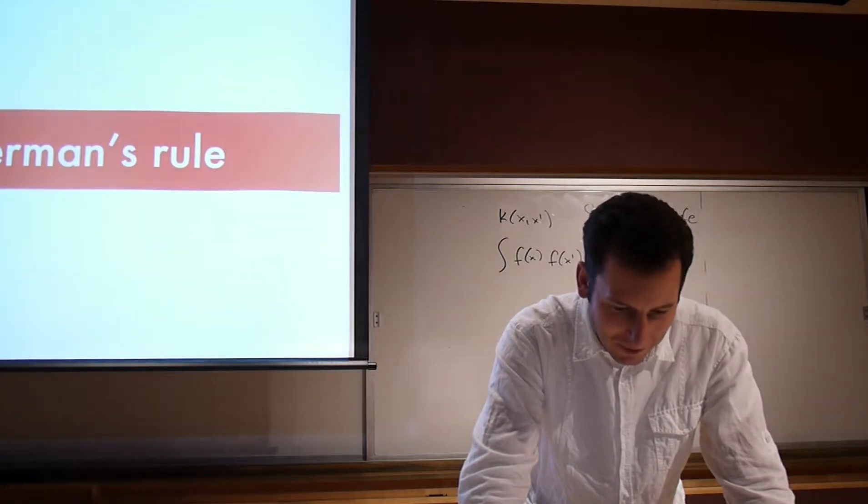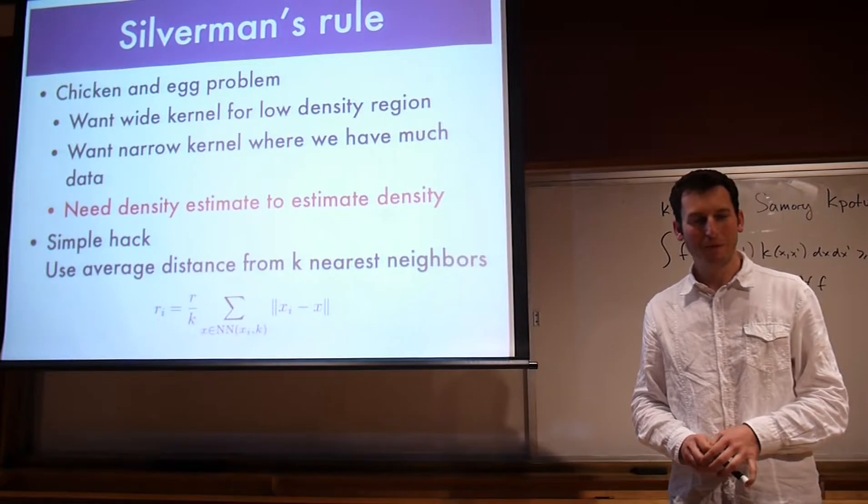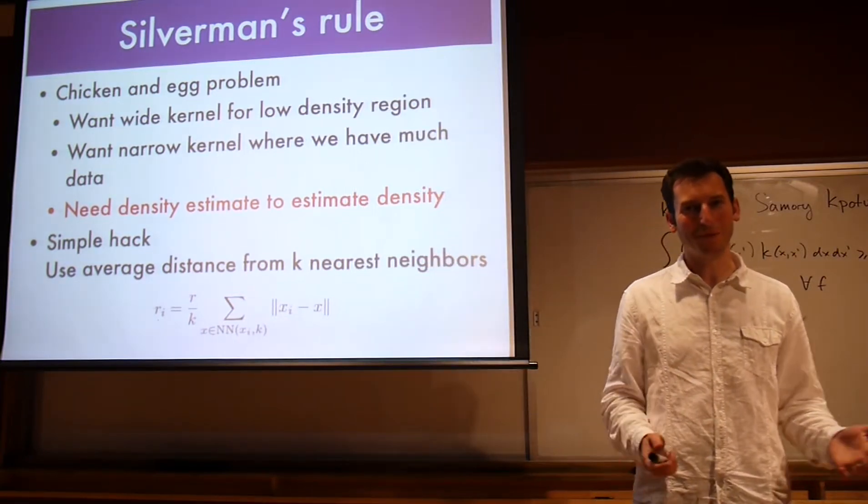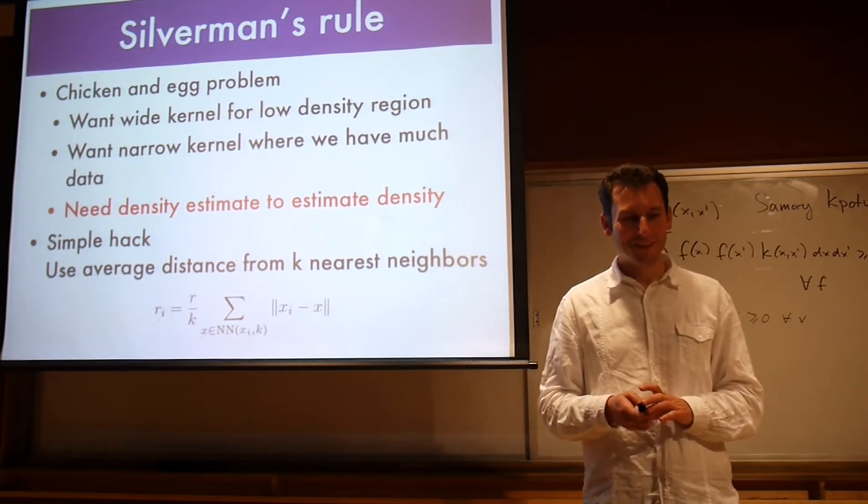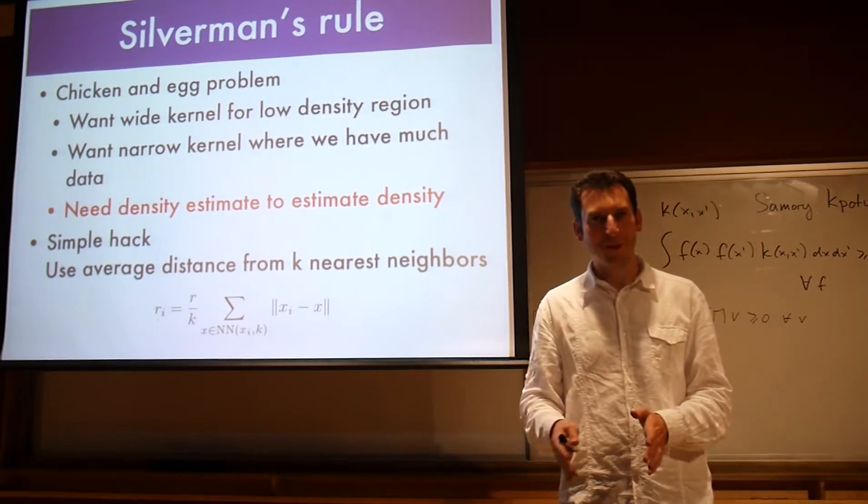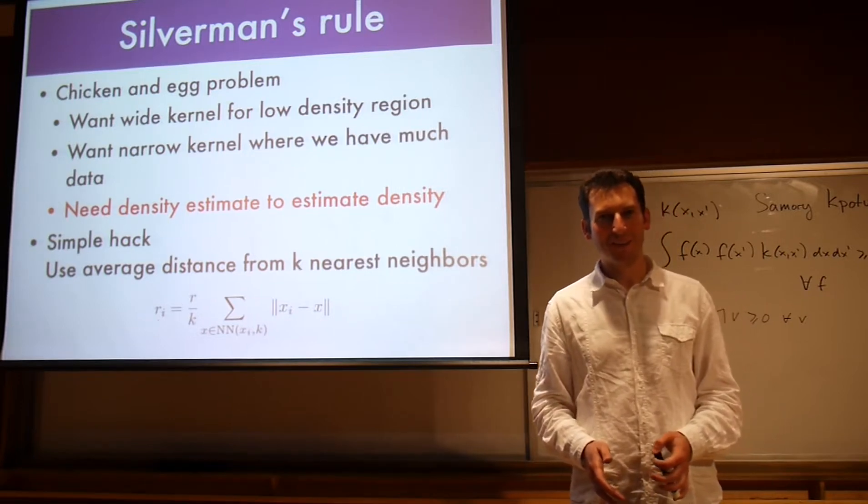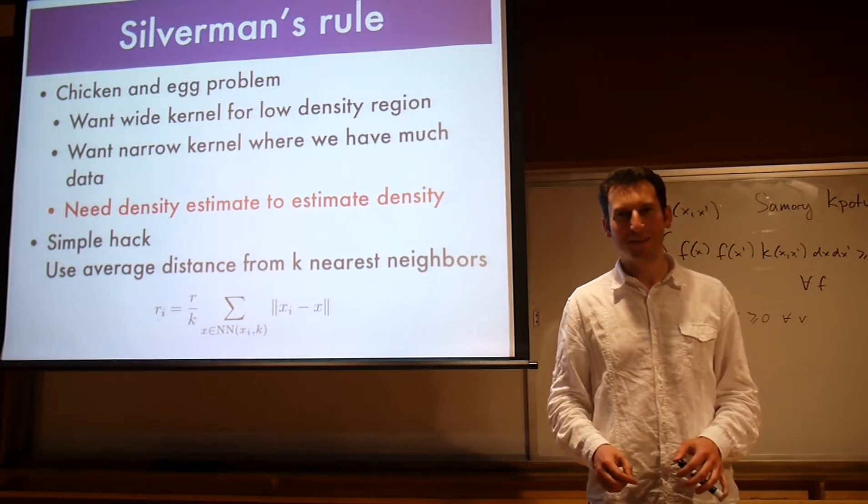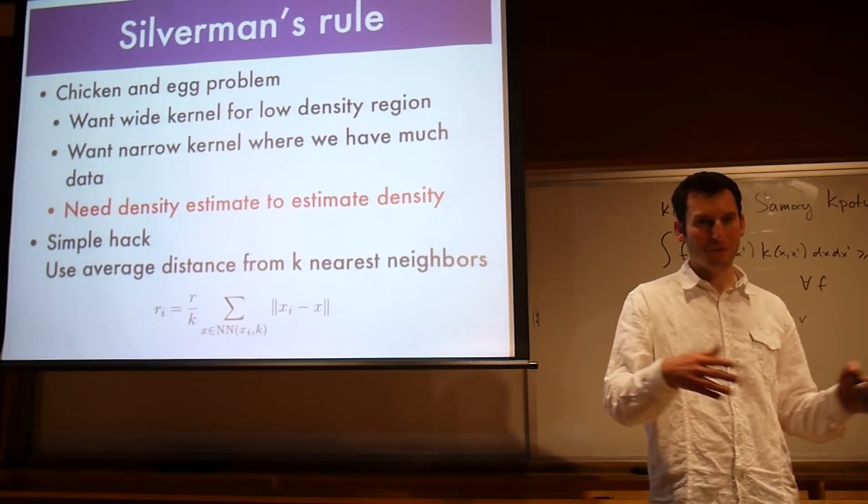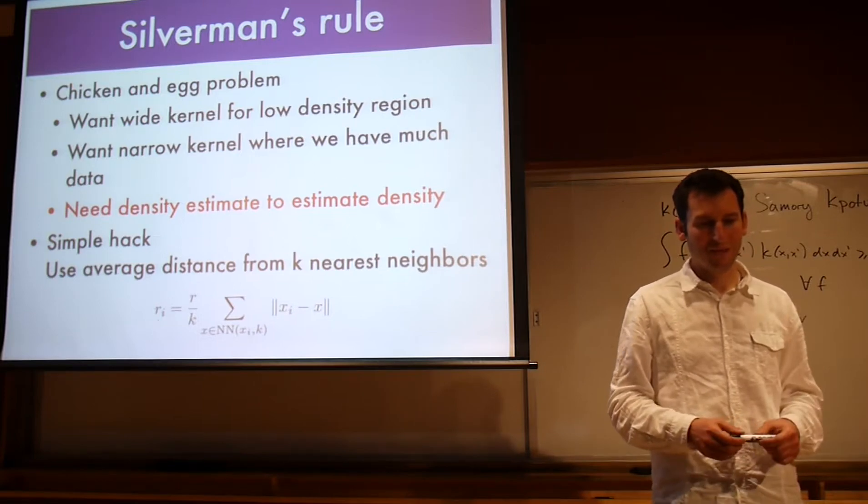Here's a problem with our density estimate. It's kind of a chicken and egg problem. In a way we want to have a wide kernel where we have very little density. Because our density is not going to be uniform. If it's uniform, I don't need a kernel density estimation in the first place. We want to have a wide kernel for low density regions. Because there we will have very little data to make sure we smooth suitably. We want a narrow kernel where we have a lot of data. Suppose you want to do a population density estimate of the United States. Then somewhere in the Midwest, there's a lot of land where there are hardly any people. And then you get cities like New York, San Francisco, whatever, where you have a lot of very high population density. But it's still non-uniform throughout the city. So you want to have a very narrow scale in the cities and a very wide scale in the countryside.